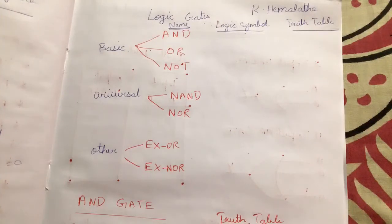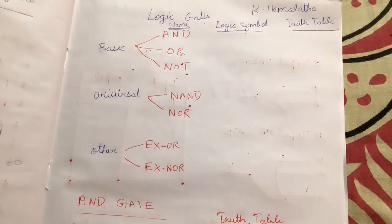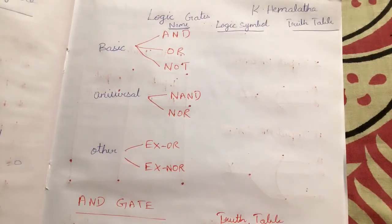In this class we are going to see about the logic gate. A logic gate is used to build a digital system. Using logic gates you can build a digital system, and here we can have more than one input — you can give multiple inputs and will get only one output. That is the meaning of a logic gate.